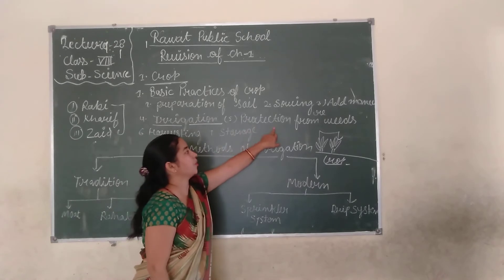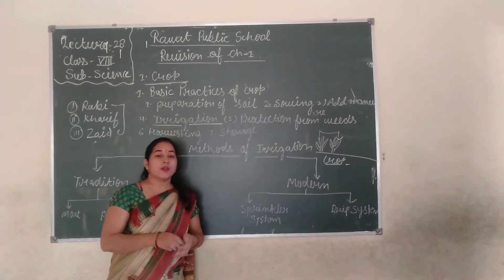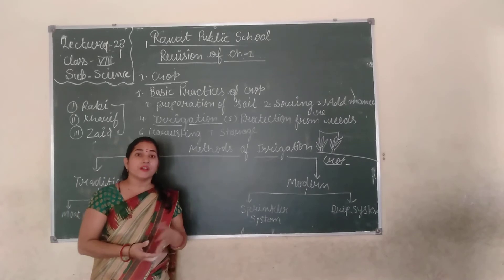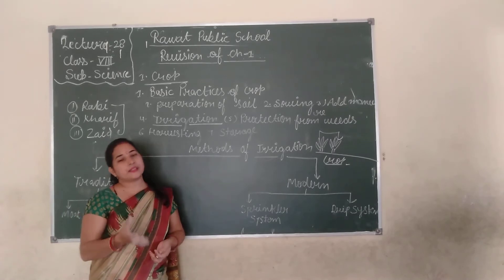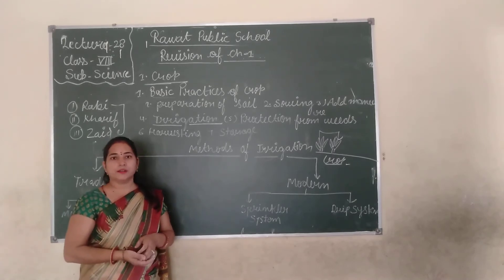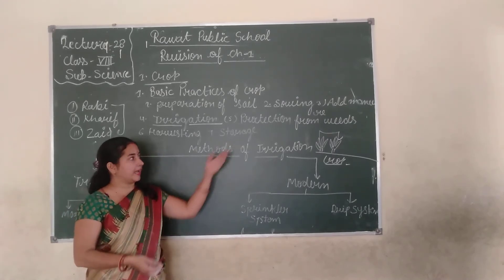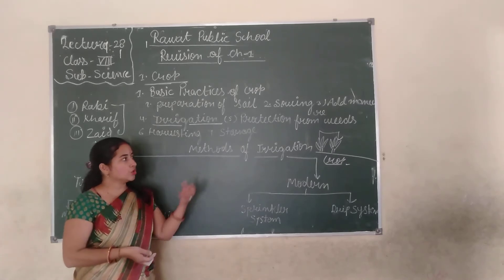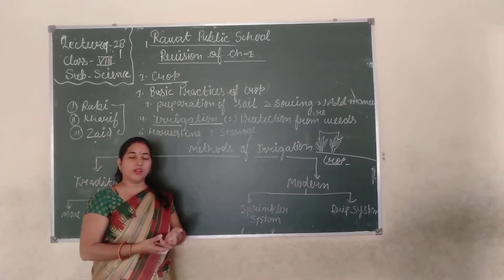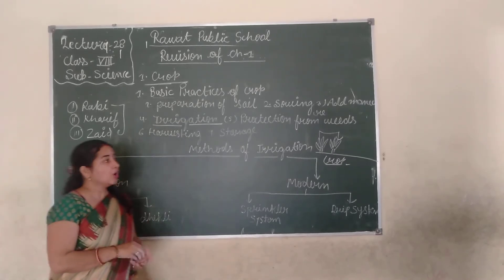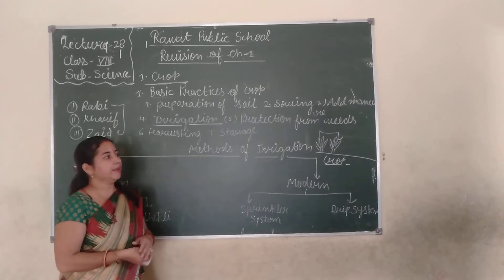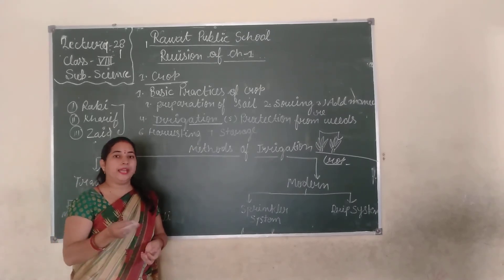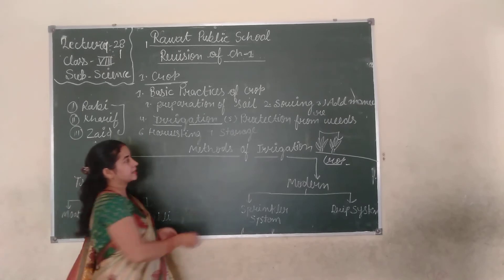Next is protection from weeds. What is the meaning of weeds? Undesirable plants grown in the field are called weeds. We can protect the crop from weeds using insecticides and pesticides.